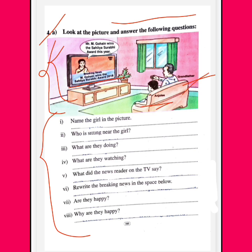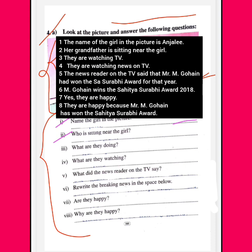Number 1: Name of the girl in the picture. The name of the girl in the picture is Anjali. Number 2: Who is sitting near the girl? Her grandfather is sitting near the girl. Number 3: What are they doing? They are watching television. They are watching news on the television.